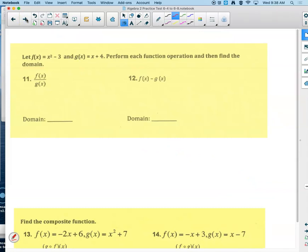And now we'll finish up today with 11 and 12. Anybody need more time to write yourself a little reminder about this page or anything? Because I would be putting a big star next to this one right here. To remember that you have to do the plus and minus piece on that one. All right. 11 and 12. Let f of x equal x squared minus 3. g of x equals x plus 4. Perform each function operation and then find the domain. So, f of x divided by g of x.